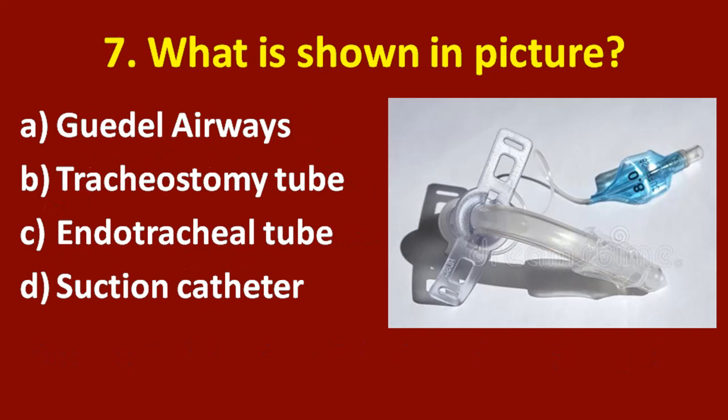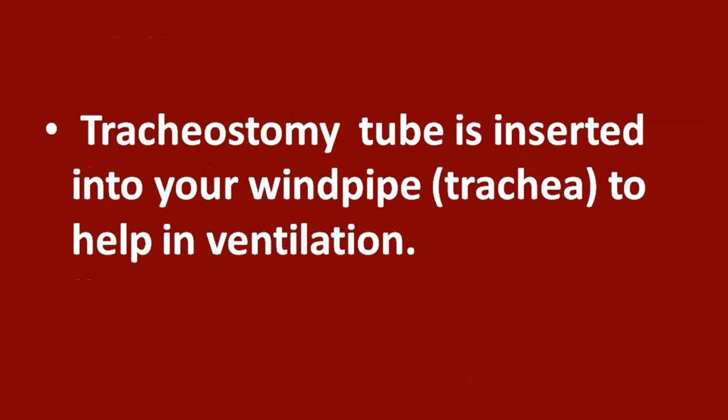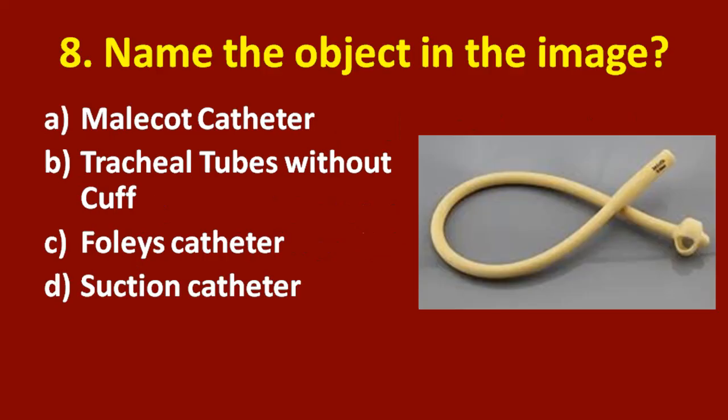Seventh question: what is shown in the picture? Option A: Guedel airway. Option B: tracheostomy tube. Option C: endotracheal tube. Option D: suction catheter. The correct answer is option B, tracheostomy tube. A tracheostomy tube is inserted into your windpipe or trachea to help in ventilation.